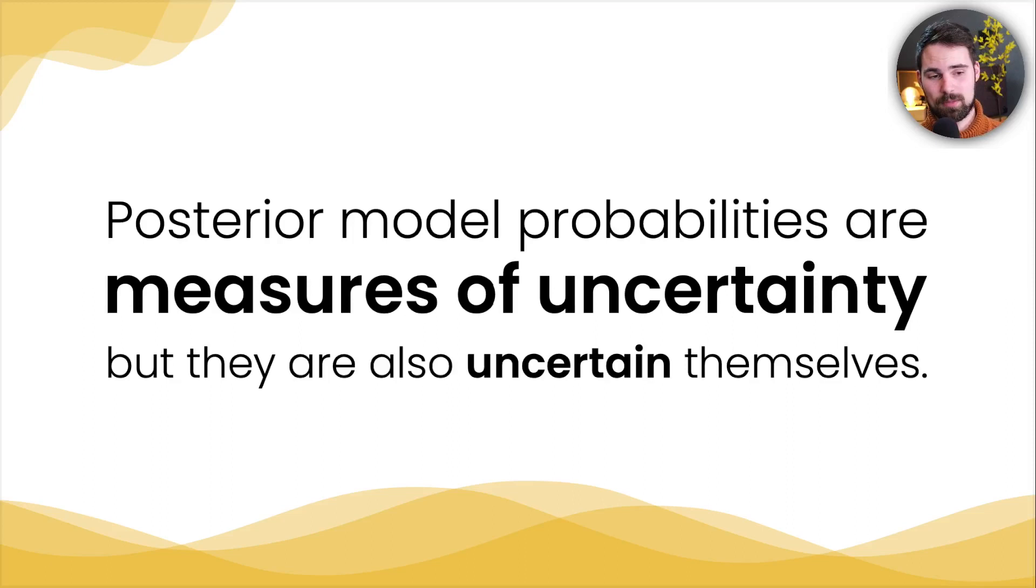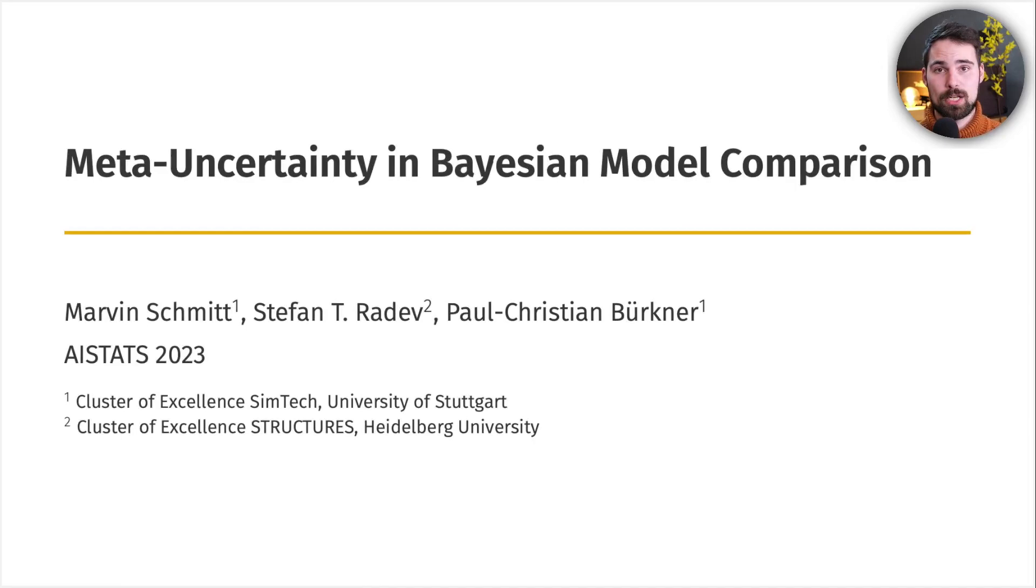Posterior model probabilities are measures of uncertainty, but they are also uncertain themselves. Let me explain.